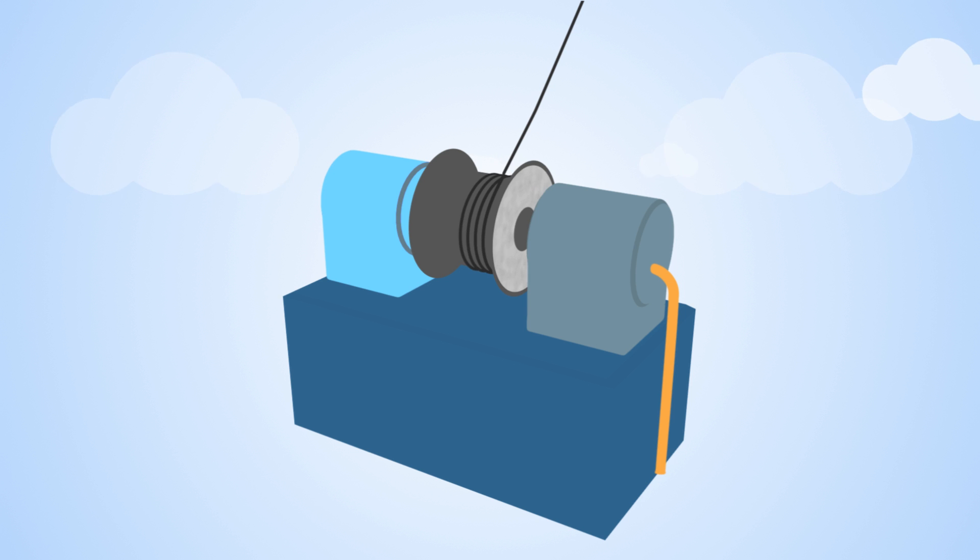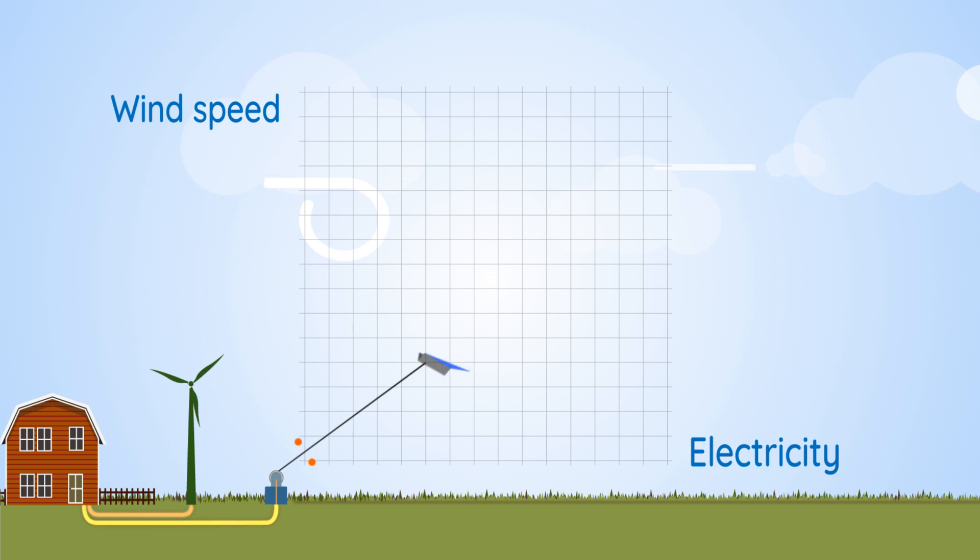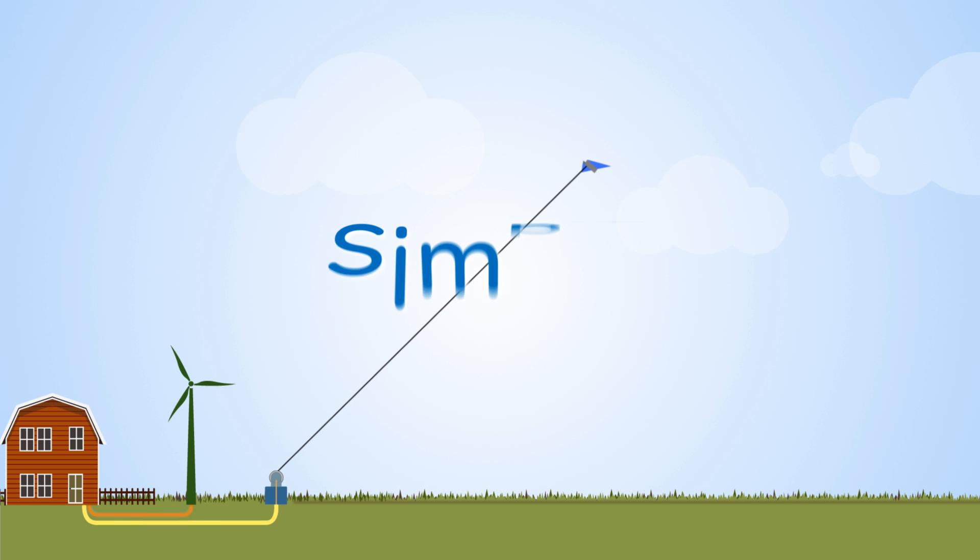the ground station rewinds the Tether, pulling it back in and only using a tiny bit of the energy generated going out before repeating the cycle. The higher the wind speed, the more electricity. Simple.